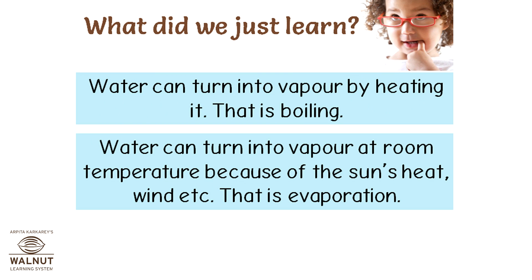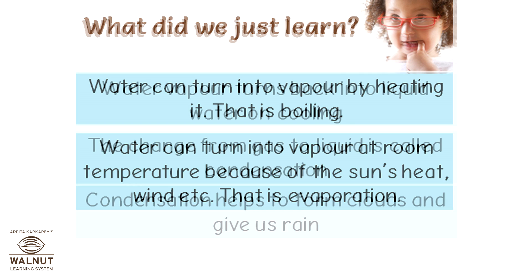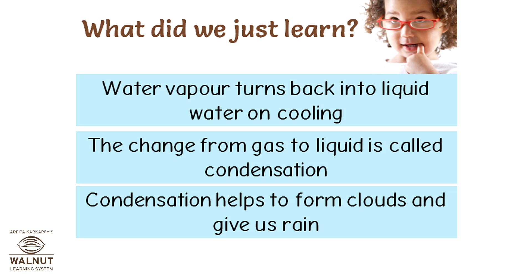What did we just learn? Water can turn into vapor by heating it — that is boiling. Water can turn into vapor at room temperature due to the sun's heat, wind, etc. — that is evaporation. Water vapor turns back into liquid water on cooling — the change from gas to liquid is called condensation. Condensation helps to form clouds and give us rain.